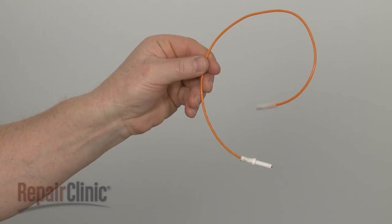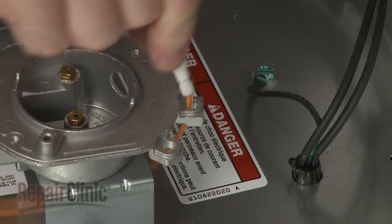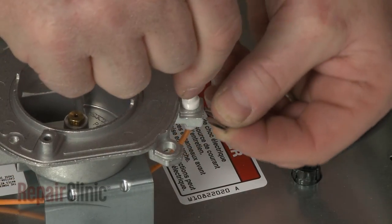Install the new spark electrode by positioning it in the holder, then slide in the retainer to hold it in place.